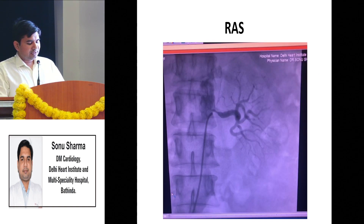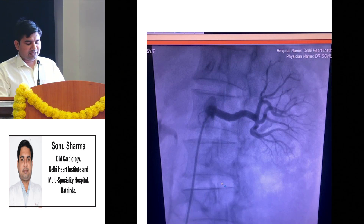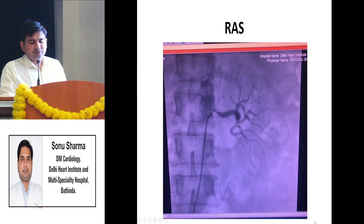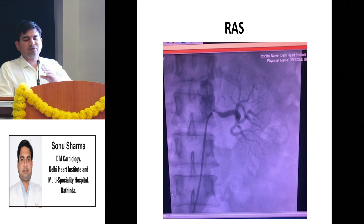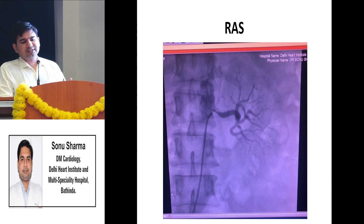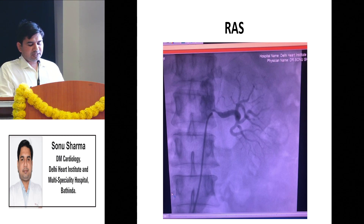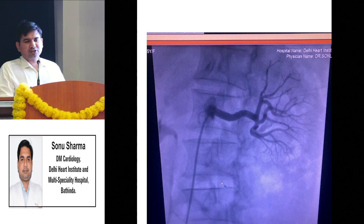For renal artery stenosis stenting, here is a case example: the patient was a mother of a medical student, on four antihypertensives - telmisartan 80mg, chlorthalidone 12.5mg, amlodipine 10mg, and prazosin 5mg BD. Even after four drugs her BP was more than 150 every time - sometimes 160/100 or 170/100. Renal Doppler was done and diagnosed bilateral renal artery stenosis. Angiogram confirmed bilateral renal artery stenosis. After stenting both arteries, within one month she was on just amlodipine 2.5mg once a day, and her BP was 130/70 to 120/70. This is the major benefit of renal artery stenting.